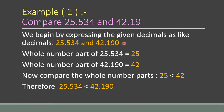We begin by expressing the given decimals as like decimals: 25.534 and 42.190. I did this because I wanted to make the given decimal numbers like decimals, as we learned in the previous session. After the decimal, 25.534 has three decimal places and 42.19 has only two, so we make them equal by putting an extra zero, giving us 42.190.